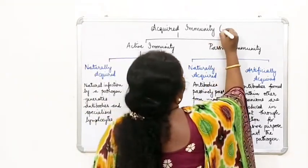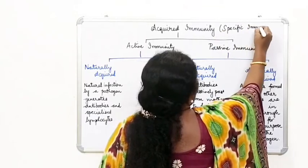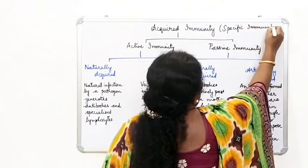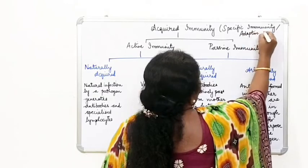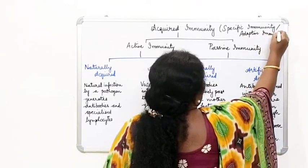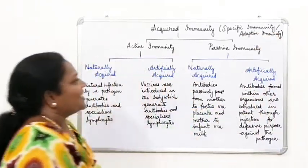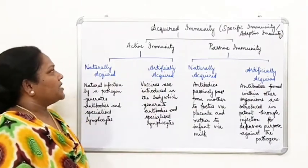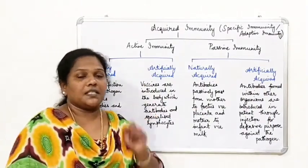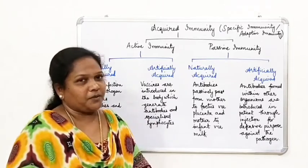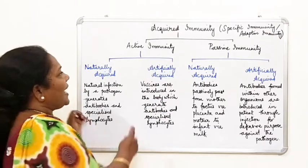Acquired immunity is otherwise called as specific immunity or adaptive immunity. This acquired immunity has the capacity of recognizing and eliminating specific pathogens.